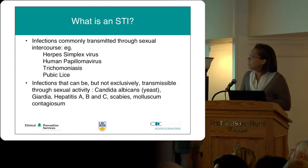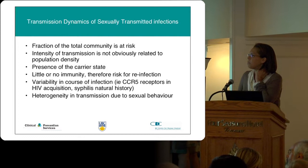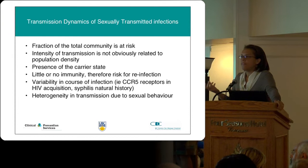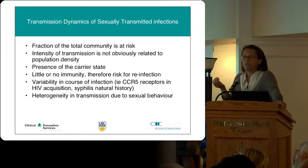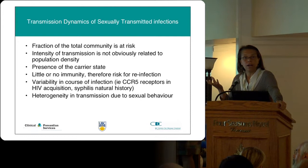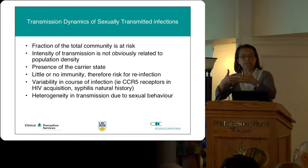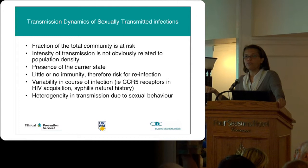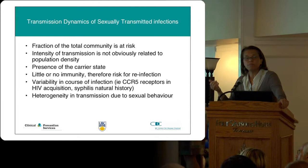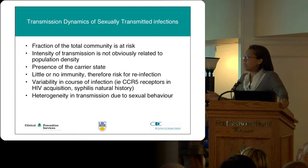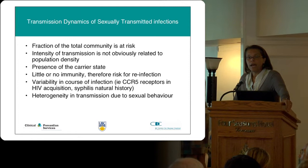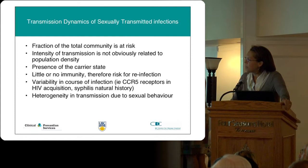The key epidemiological points for STIs: there's a fraction of the community that's at risk, and the intensity of transmission is not simply related to population density. This is important because of the concept of sexual networks — everyone who engages in sex is at risk, but certain networks carry greater risk because the density of infections within that network is greater. One big challenge is the carrier state, particularly with chlamydia, where people can be asymptomatic but very effective at transmitting. There is little or no immunity to prevent these infections, and reinfection is an emerging challenge.